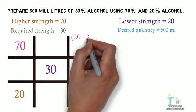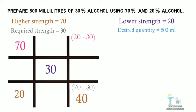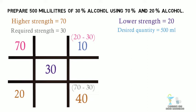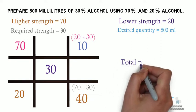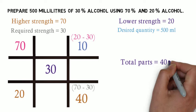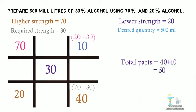In top right corner the parts of higher strength is written by subtracting the desired strength from the lower strength, that is 20 minus 30 which is minus 10. As it is the number of parts we do not take the negative sign. Now at the parts of lower and higher strength we get, total parts is equal to 50.